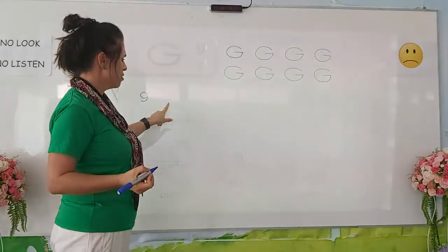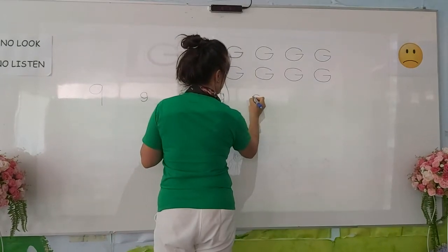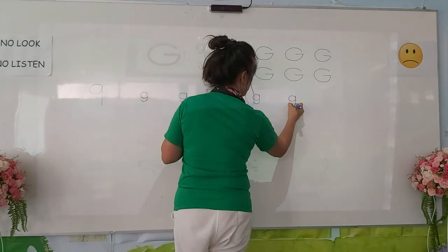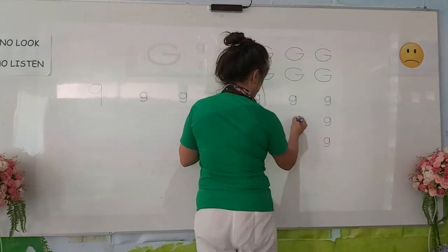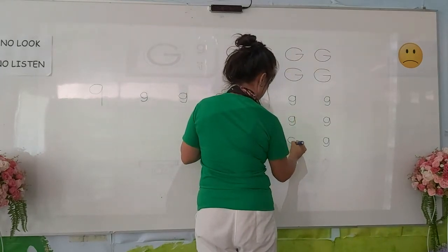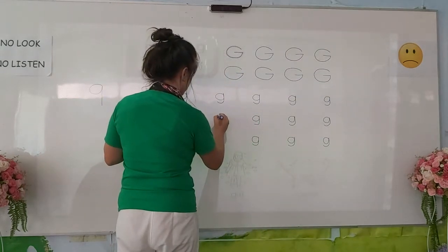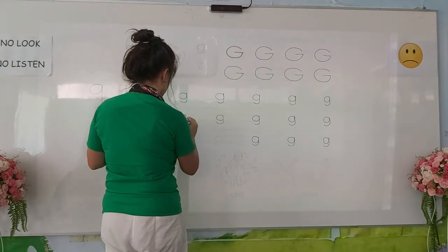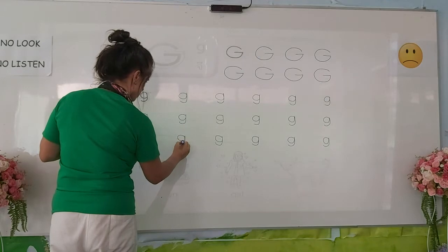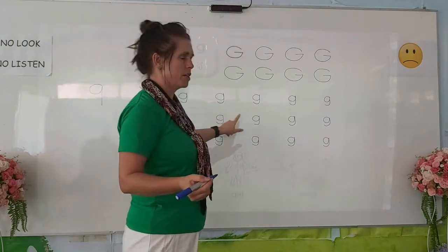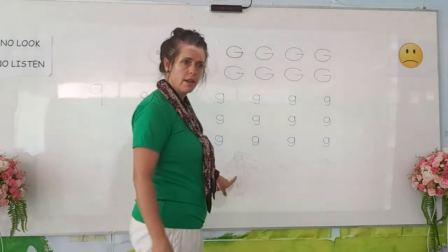Now you can trace your G's. If you are finished tracing your G's, we can go through the words. Let's go through the words: gun, girl, and goat.